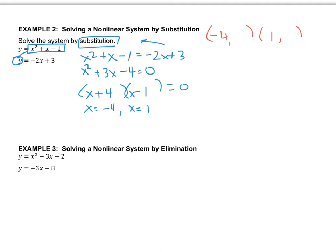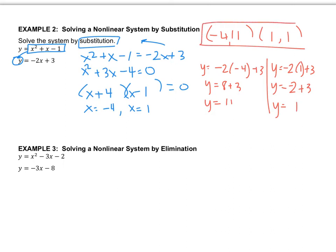So it will be negative 2 times negative 4 plus 3. So one of the intersection points is negative 4, 11. And then the other one is going to be at 1. So these are the two points of intersection. Remember, you're not finding x values. You're finding intersection points.